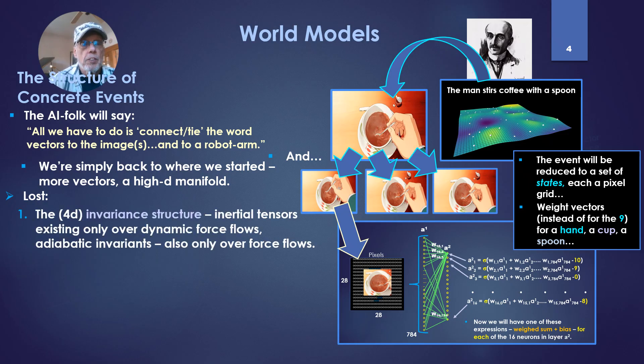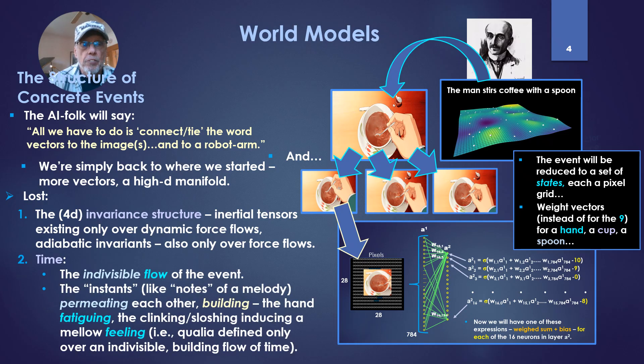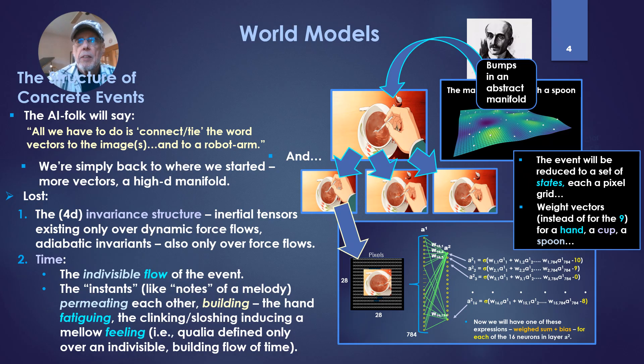What we've lost, first, the four-dimensional invariant structure we just noted, the inertial tensors, existing only over dynamic force flows. Adiabatic invariants, also only force flows. And secondly, time, the indivisible flow of the event. The instances, like notes of a melody permeating each other, building, the hand fatiguing, the clinking, sloshing, inducing the same mellow feeling. It is the quality I defined over an indivisible building flow of time. So bumps in an abstract manifold, as I talked about, simply do not equal that event.